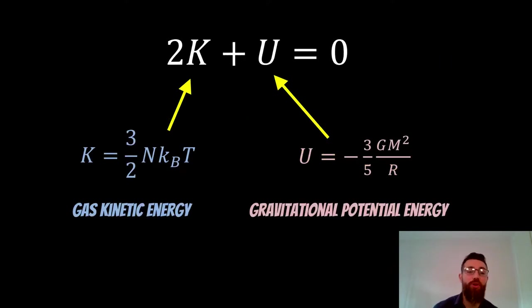And that's given in terms of the number of particles being considered in this system. On the right hand side, you've then got the gravitational potential energy, where we've got the mass of the cloud and the radius of the cloud.